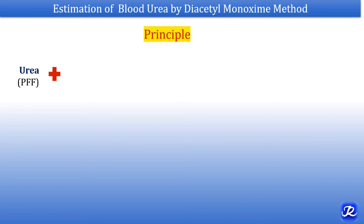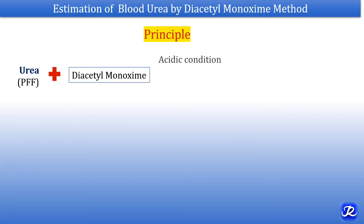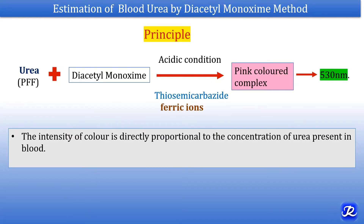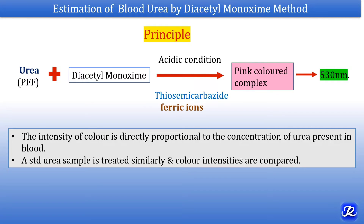Before calculation, let's understand the principle. The urea present in the protein-free filtrate reacts with diacetylmonoxime in acidic conditions, in the presence of thiosemicarbazide and ferric ions, to form a pink-colored complex, which is measured colorimetrically at 530 nanometers. The acidic condition is provided by H₂SO₄ used during protein-free filtrate preparation. The intensity of color is directly proportional to the concentration of urea present in the blood, and a standard urea sample is treated similarly and color intensities are compared.